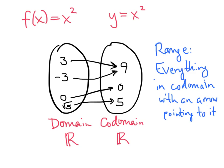There are some numbers in our co-domain — like negative 4 — that we simply can't get by plugging anything into the squaring function. Is there any number we could plug in and get negative 4? No. In fact, there's no possible way to get any negative number out of our function. So the range is the set of numbers y such that y ≥ 0 — the set of non-negative real numbers.